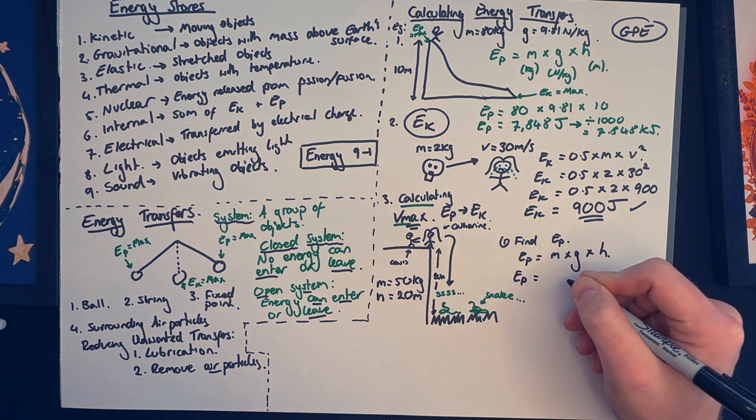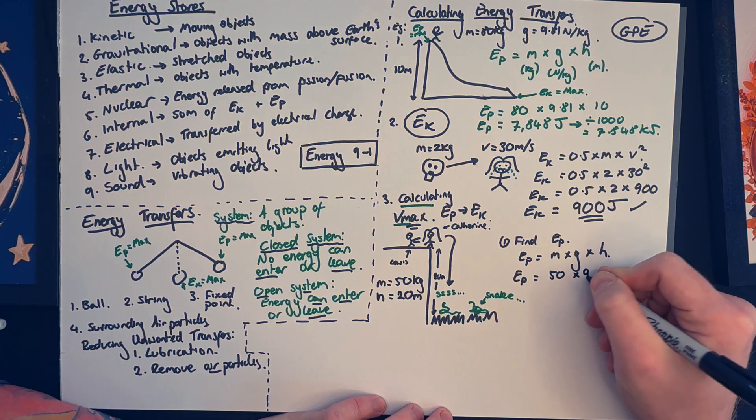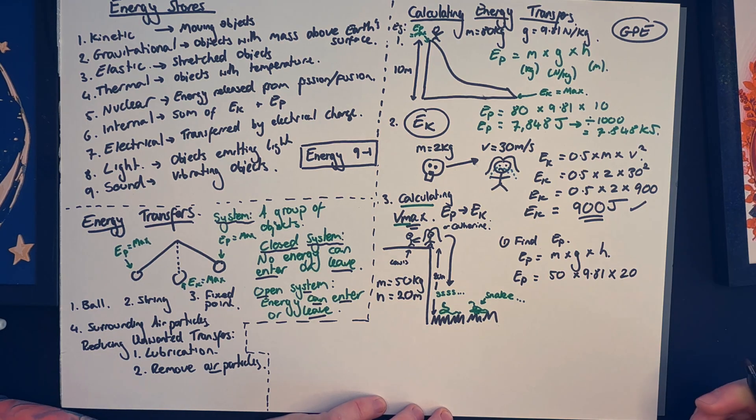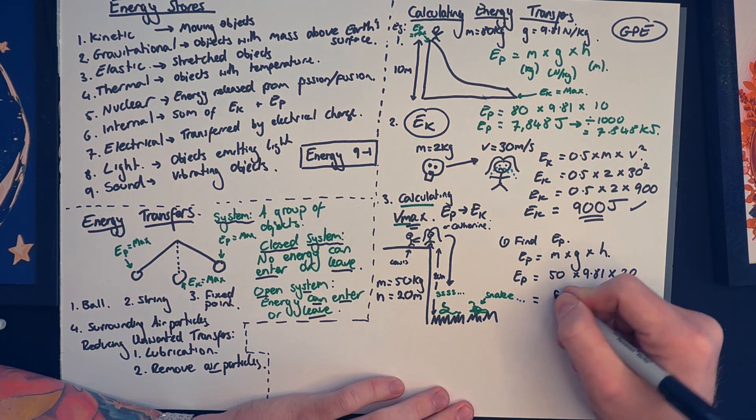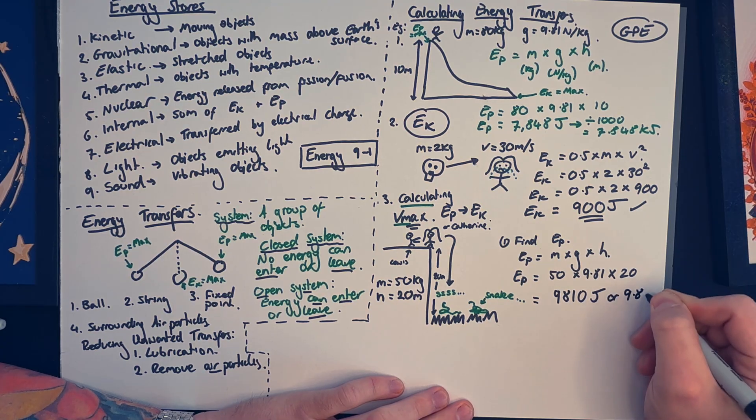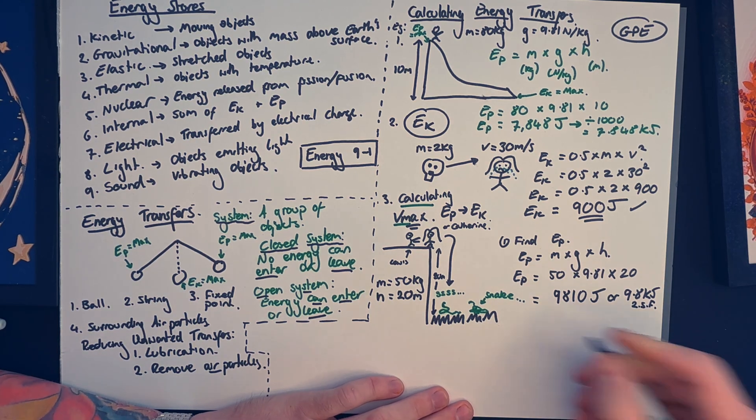So the gravitational potential energy, substituting the values in: mass for 50, gravity for 9.81, and height for 20 meters. Times those three numbers together gives us a value of 9,810 joules. Once again, I could convert that to kilojoules if I wanted by dividing by a thousand. That's 9.8 to two significant figures.